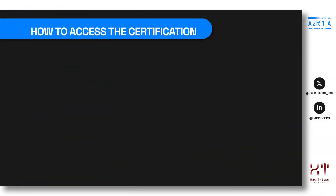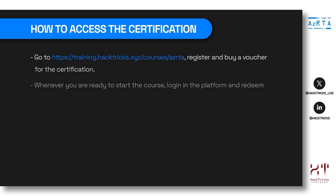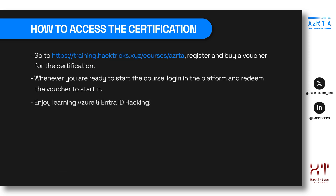To access the certification, go to training.hacktricks.xyz/courses/acrte, register and buy a voucher for the certification. Then whenever you are ready to start the course, log in to the platform and redeem the voucher to begin. This means you can buy a voucher whenever you like and wait until the time suits you better to start the certification. Once you start it, enjoy learning Azure and Entra ID hacking.